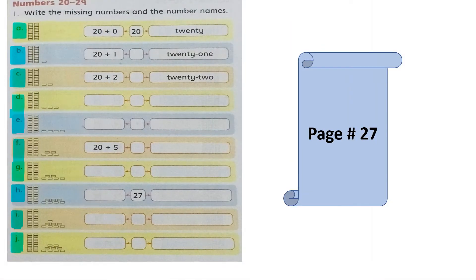Now look at page 27 of Countdown. In column A we have 2 stacks of 10 and 0 ones, so 20 plus 0 makes 20, and in number name it is called T-W-E-N-T-Y, 20. In column B you can see 2 stacks of 10 and 1 one, meaning 20 plus 1.